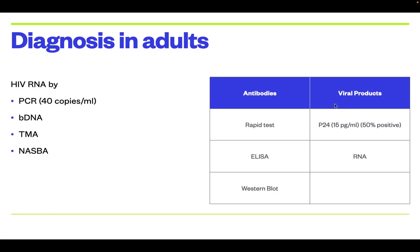Viral products can be detected by P24 antigen and RNA load. P24 antigen can be detected at the level of 15 picograms per ml, and it is positive in 50% of people. HIV RNA, which has very good sensitivity and specificity, is done by four methods. The highest sensitivity is PCR, which detects at 40 copies per ml. The others are BDNA, TMA, and NASBA.